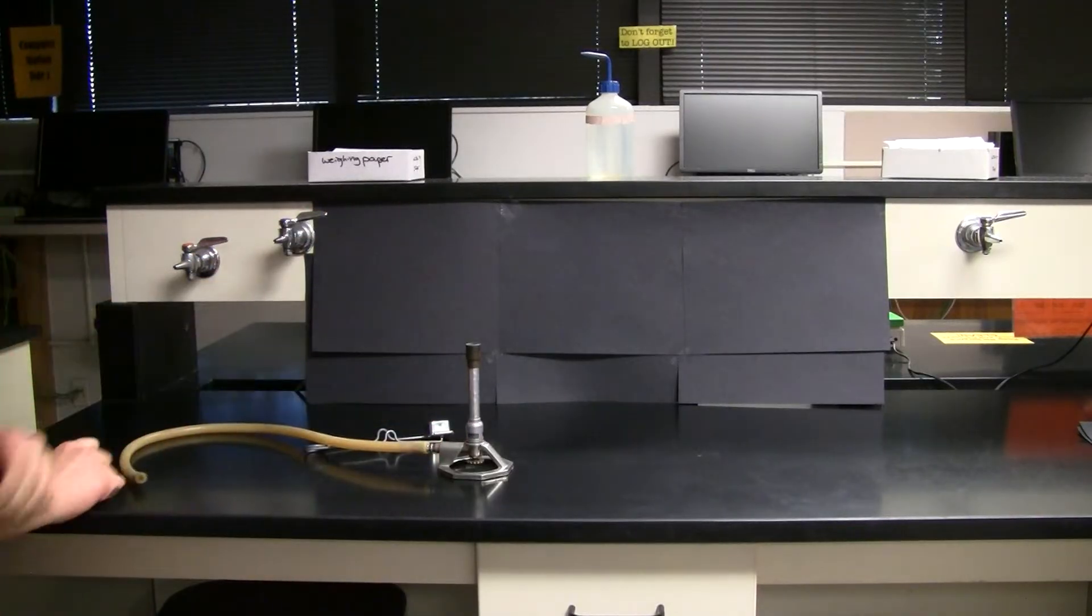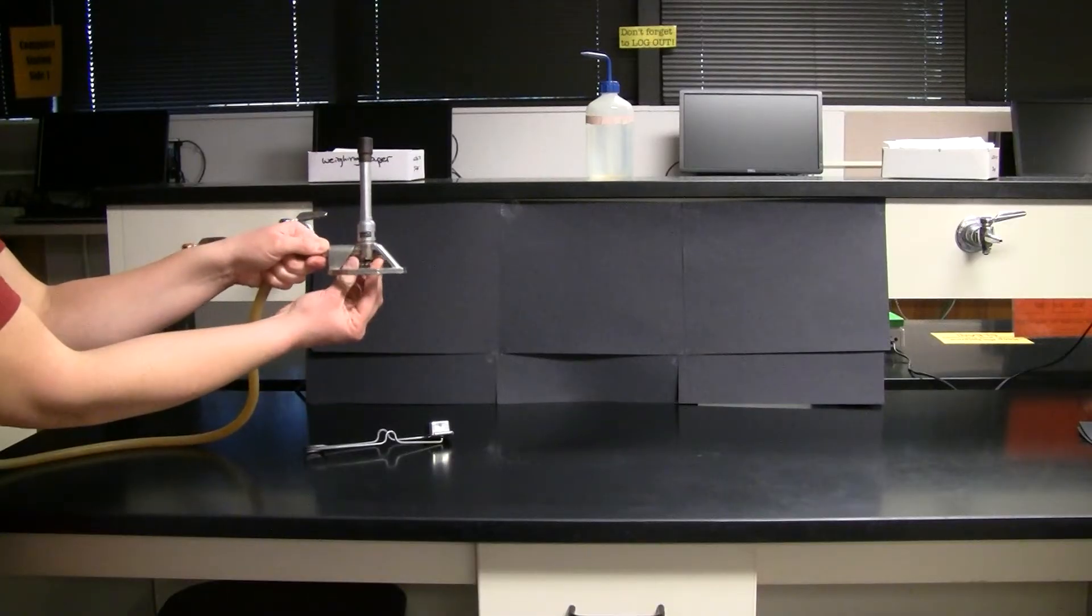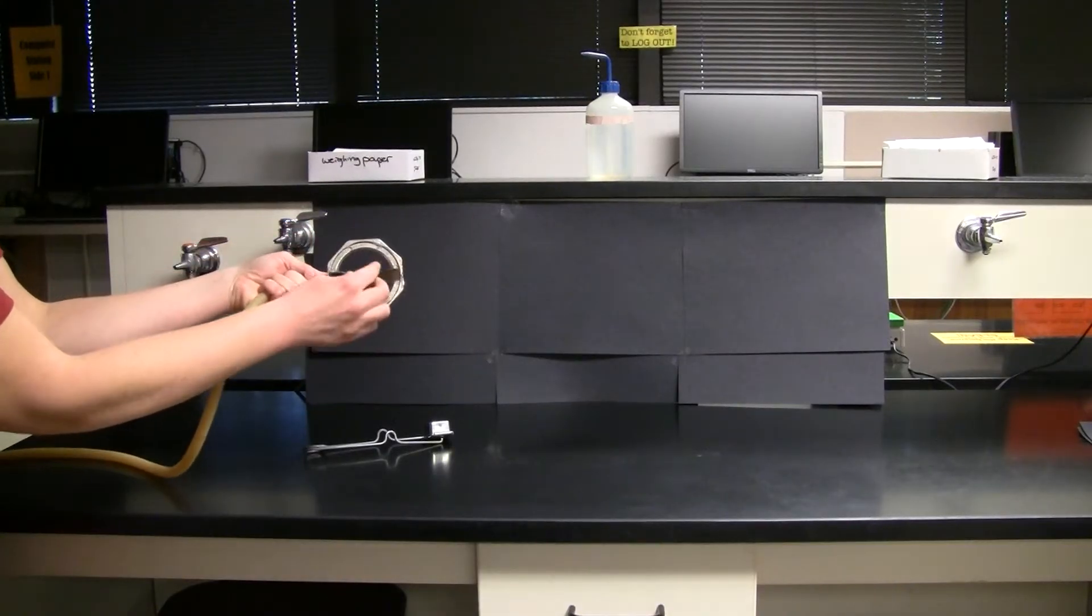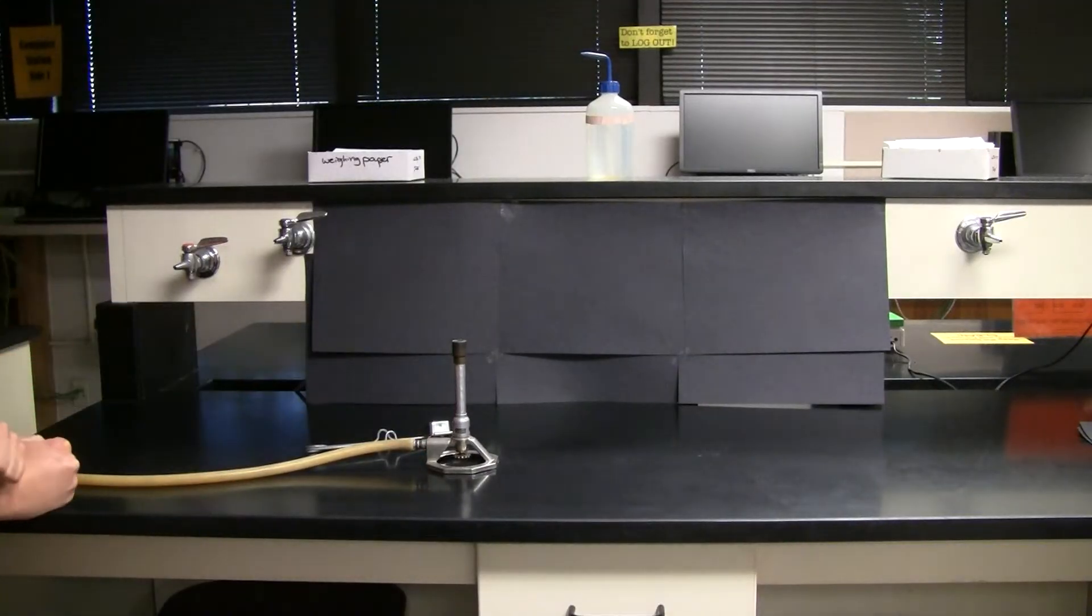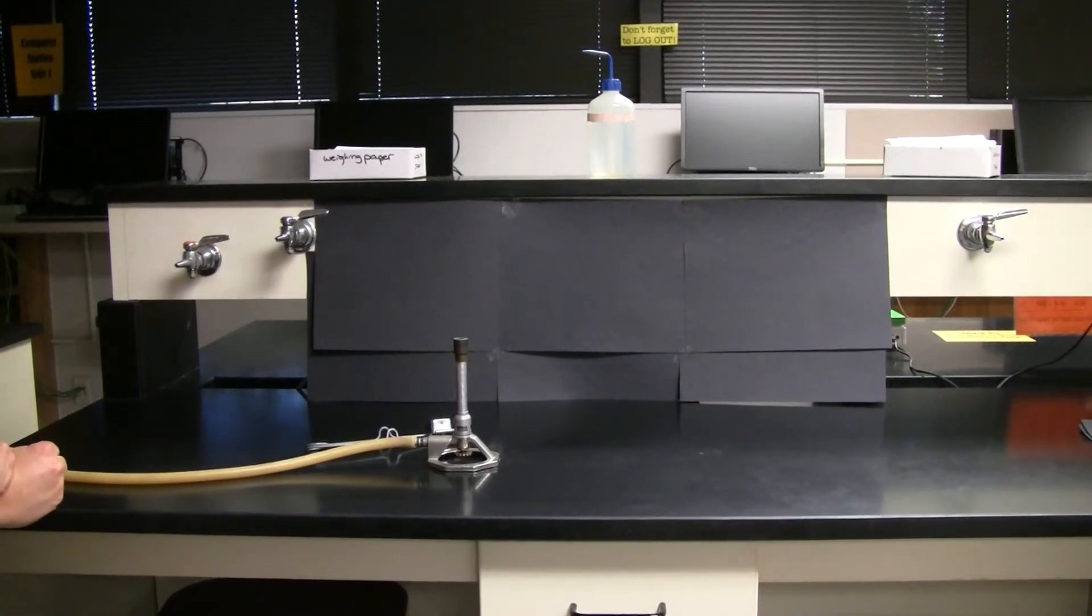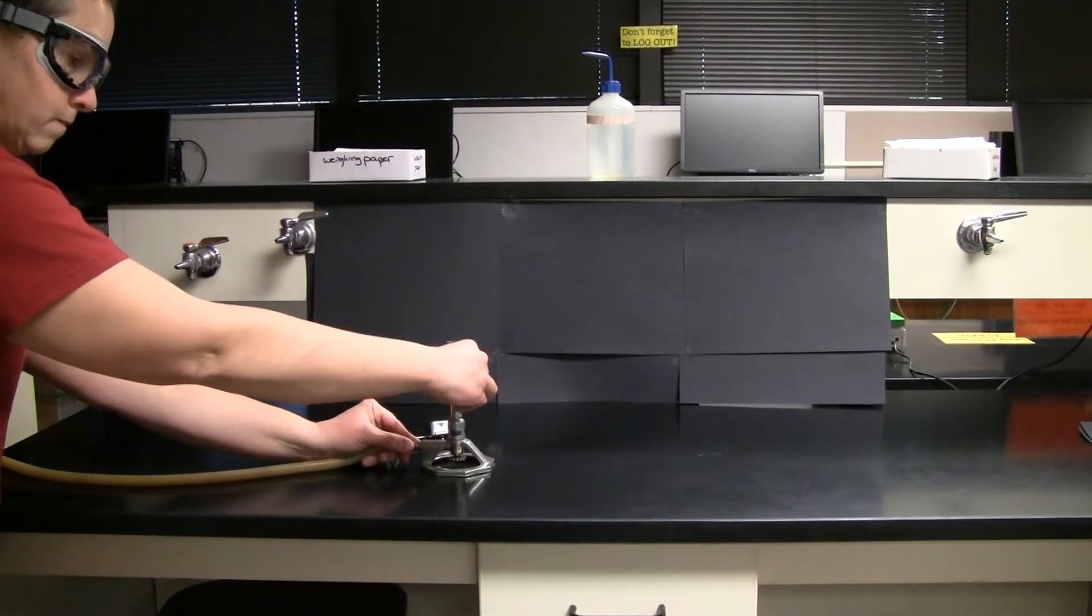There are two valves on this Bunsen burner. The bottom valve is a needle valve that controls the gas inlet. Make sure that gas valve is closed. The upper valve along the barrel of the Bunsen burner is an air inlet. Make sure that valve is closed as well.